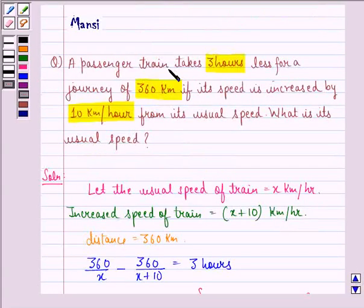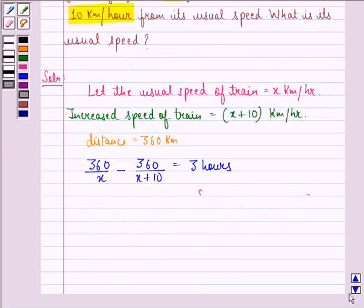And it's given to us that it takes 3 hours less for a journey of 360 km if speed is increased by 10 km per hour. So, their difference will be 3 hours.